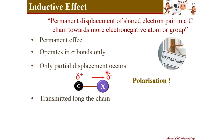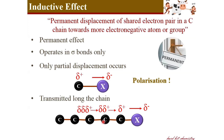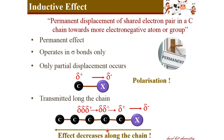The inductive effect due to X is transmitted along the chain. X pulls the bonded electron pairs from the first carbon, so the first carbon becomes slightly positive and X becomes slightly negative. Due to the inductive effect of X, the first carbon has a tendency to attract the bonded electron pair with the next carbon, making the second carbon also slightly positively charged. As you move away from group X, the strength of the inductive effect decreases, but it is transmitted along the chain.